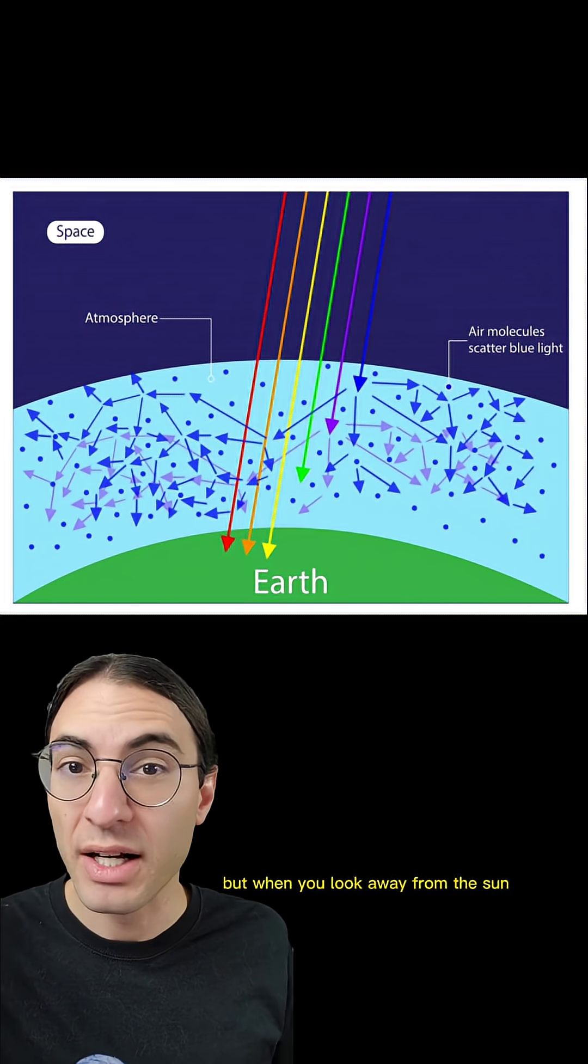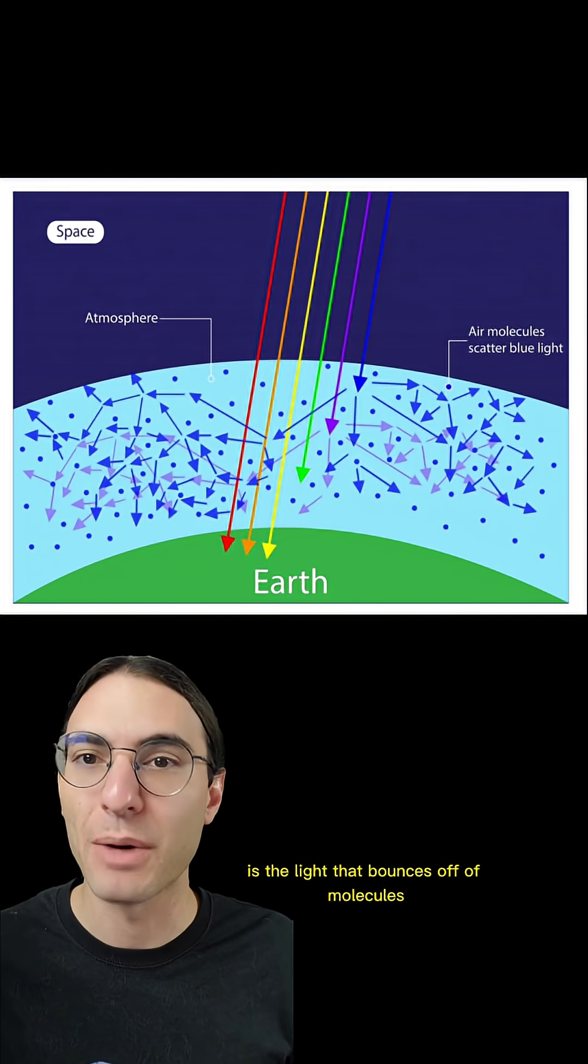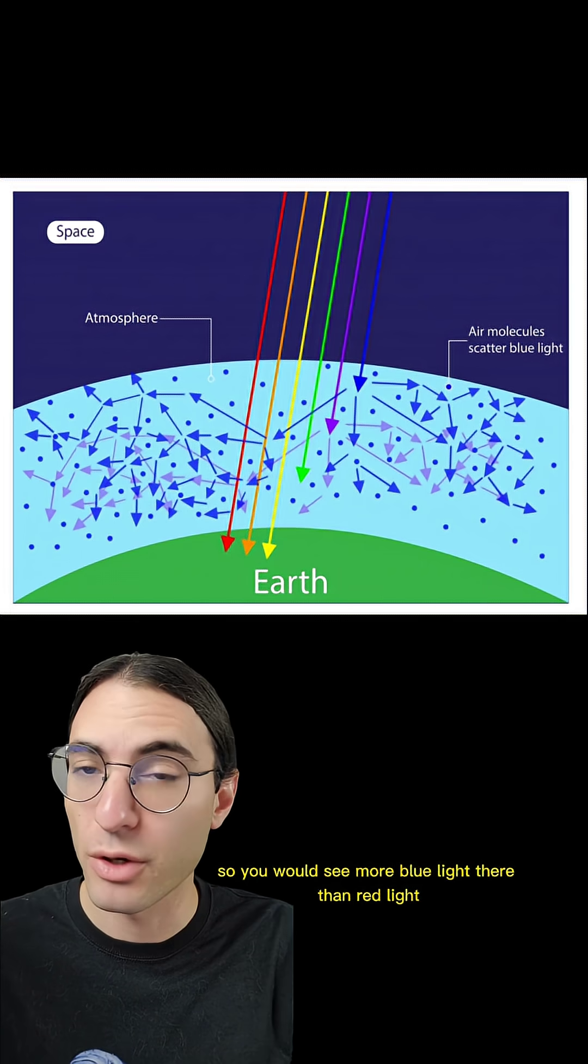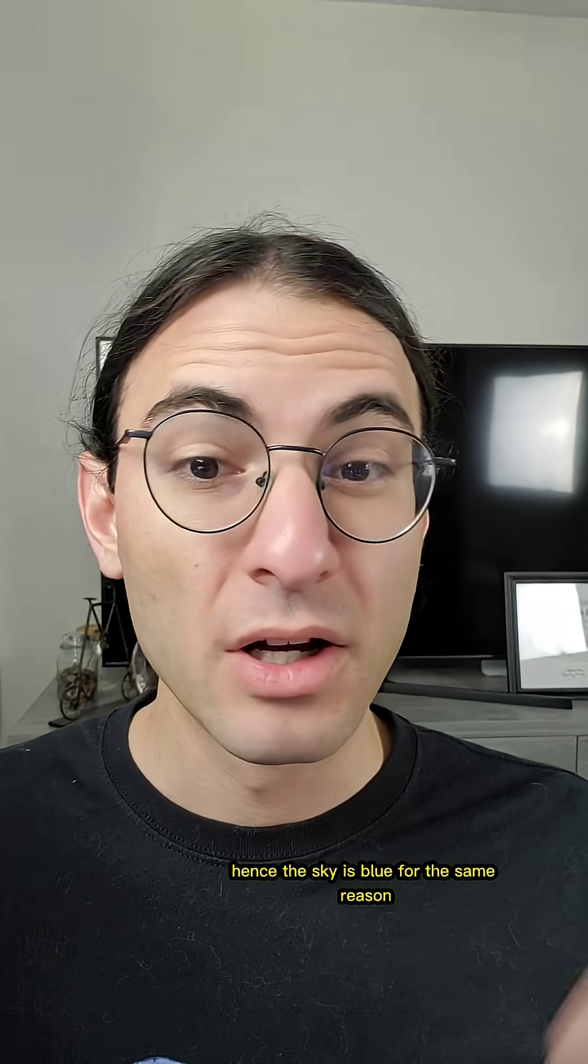But when you look away from the sun, the only source of light is the light that bounces off of molecules, so you would see more blue light there than red light, hence the sky is blue.